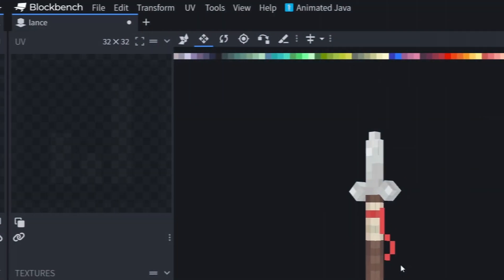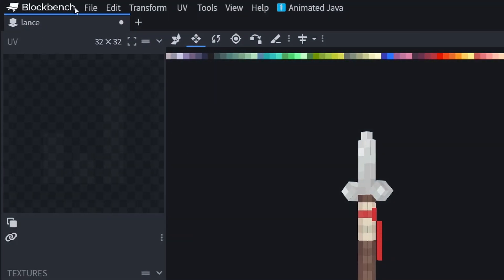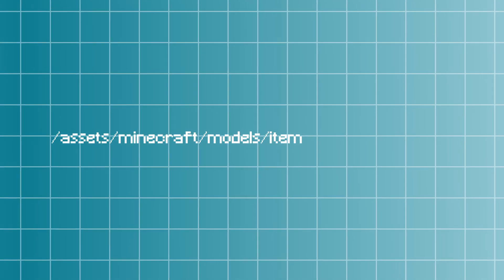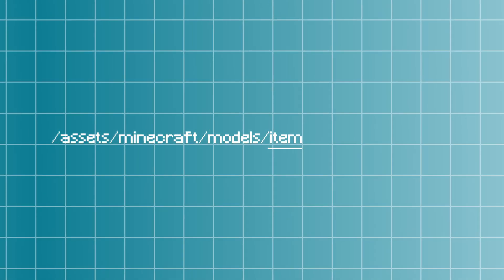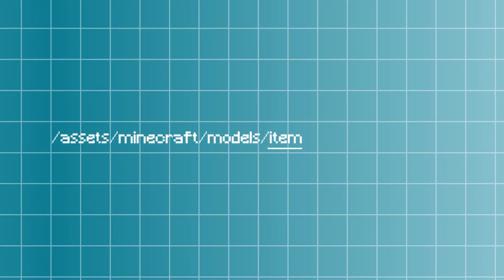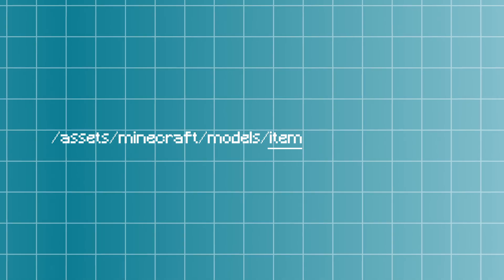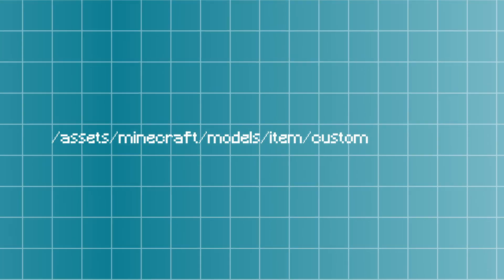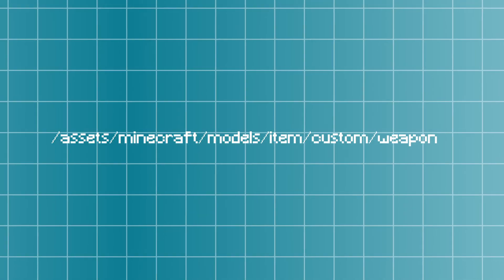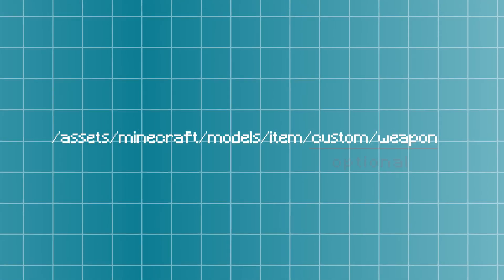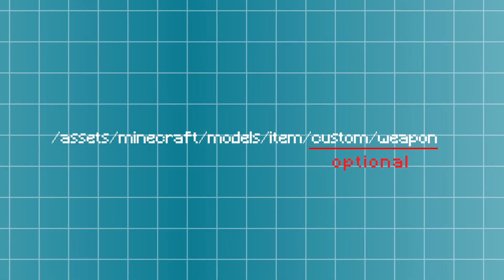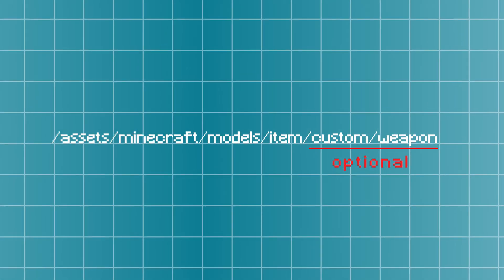For the export, you have to select 'Export Block/Item Model'. Then go to Model > Item. You can save the model there, but I like to keep things sorted, so I'm going to create a new folder called 'custom' and then another called 'weapon'. It's up to you, the important thing is to remember where you save the model.